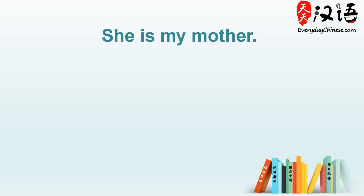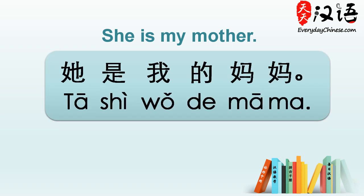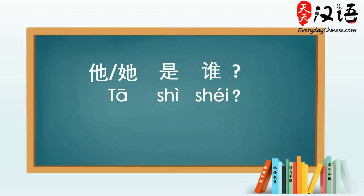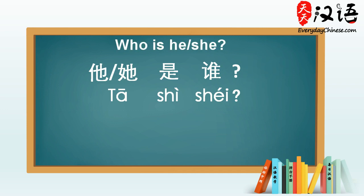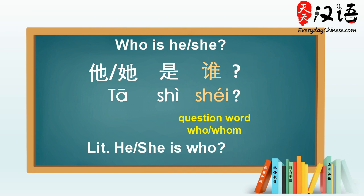So to introduce someone, for example, 'she is my mother', we say 她是我的妈妈. You may have heard many people asking 她是谁, which means 'who is he?' or 'who is she?' Here, 谁 is a question word which translates to 'who' or 'whom'. So 她是谁 literally means 'he is who?' or 'she is who?' Listen again: 她是谁。